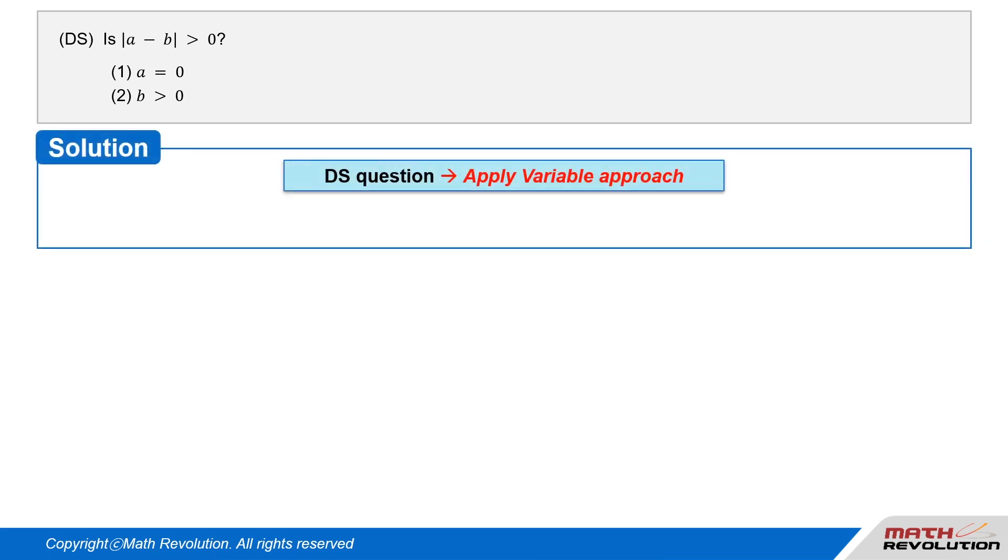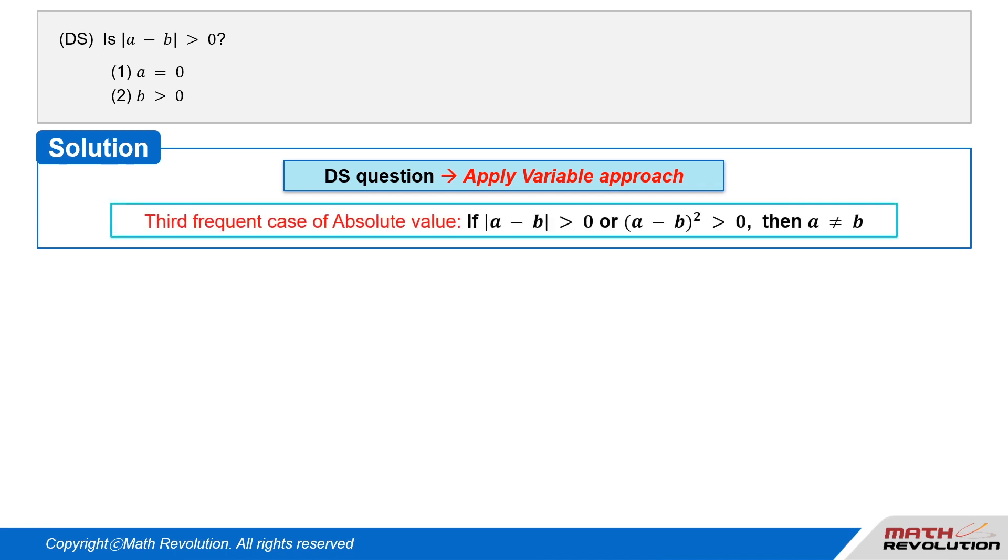Solution. Let's solve this DS question using the variable approach. This question deals with the third frequent case of absolute value. If absolute value of whole of a minus b is greater than zero, or square of whole of a minus b is greater than zero, then a is not equal to b.